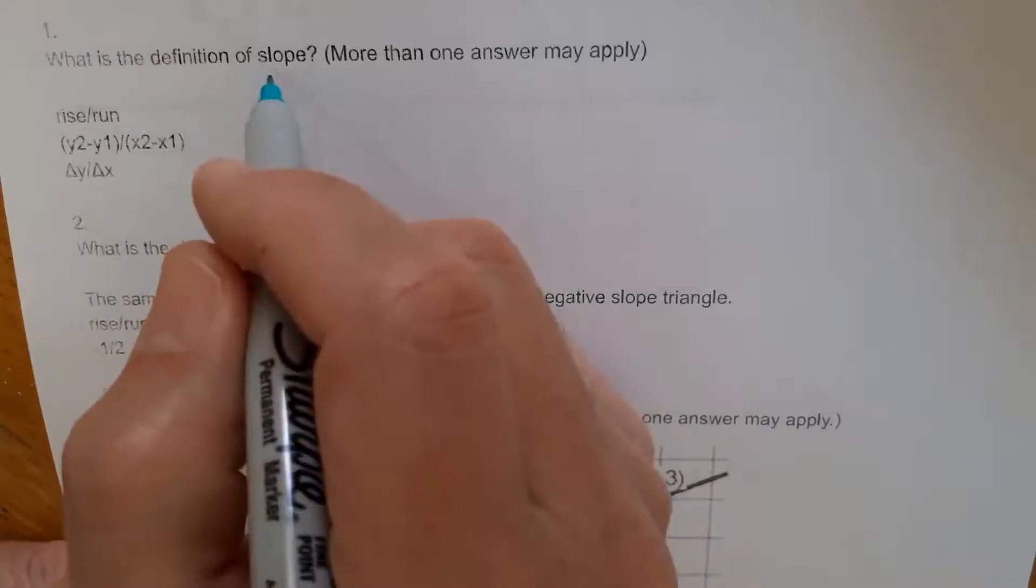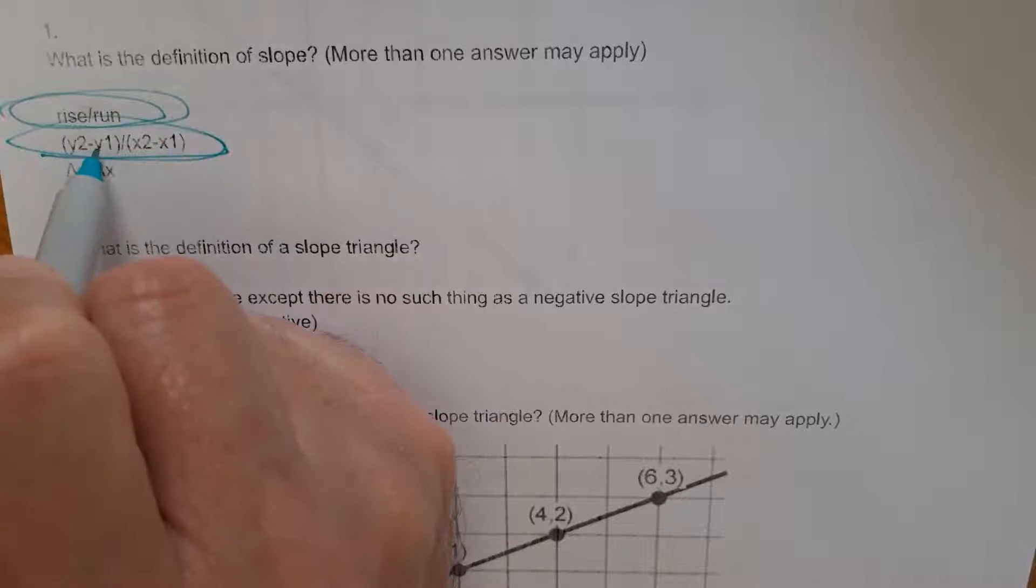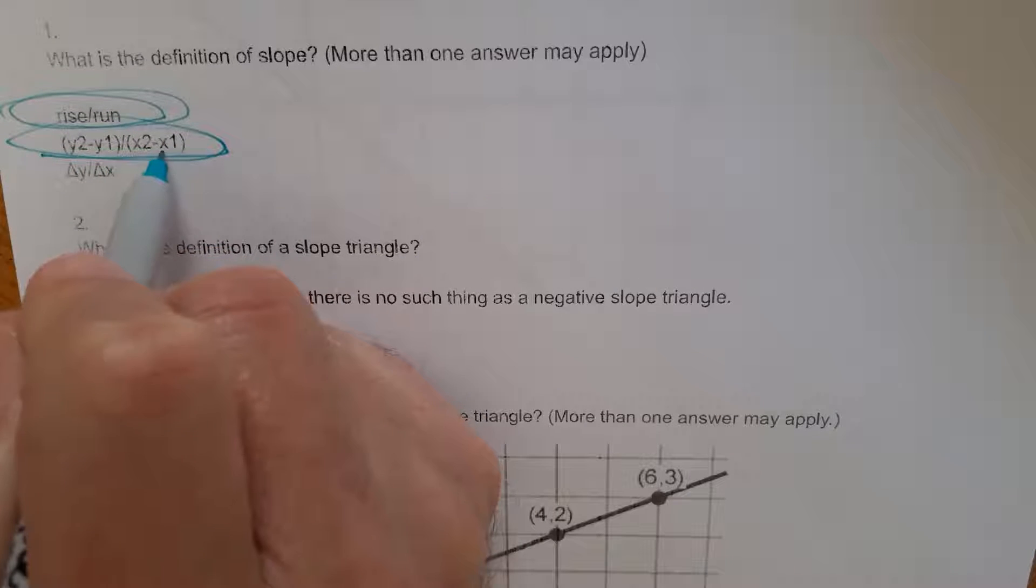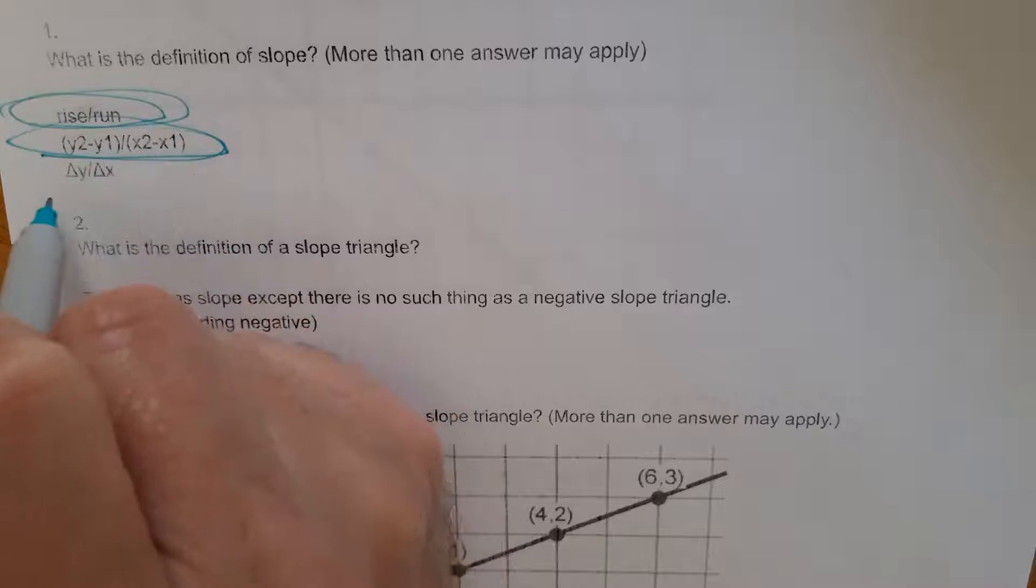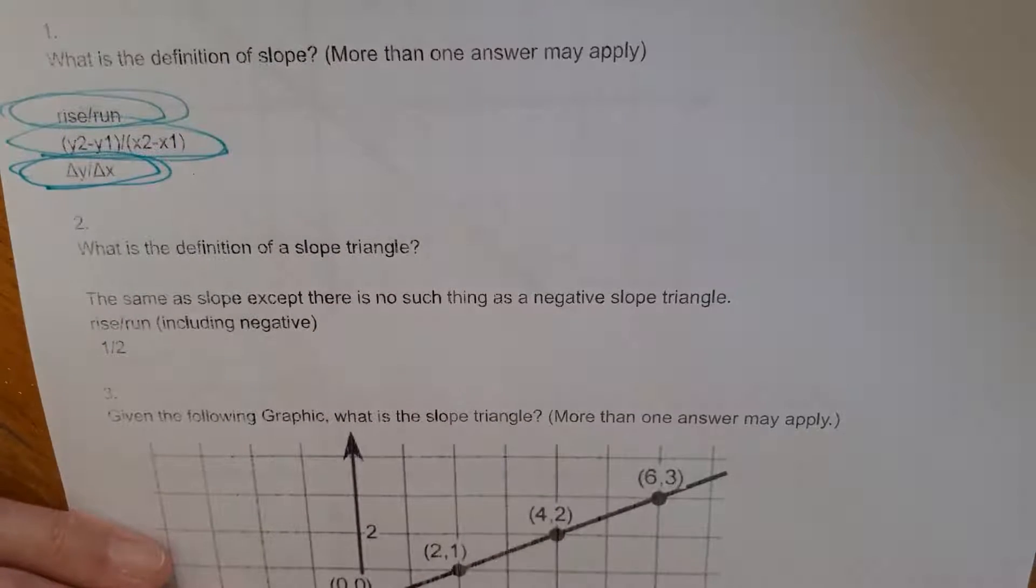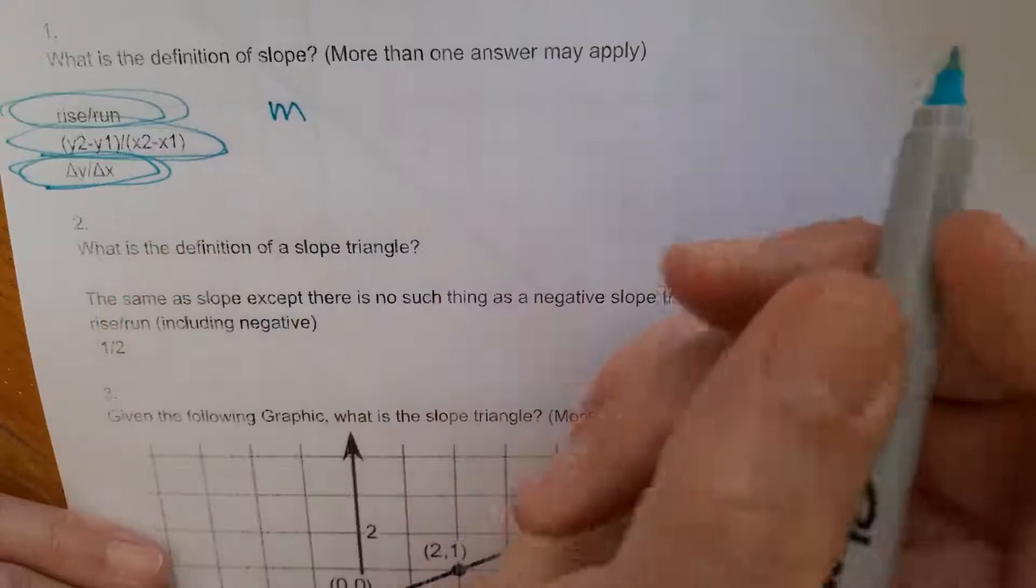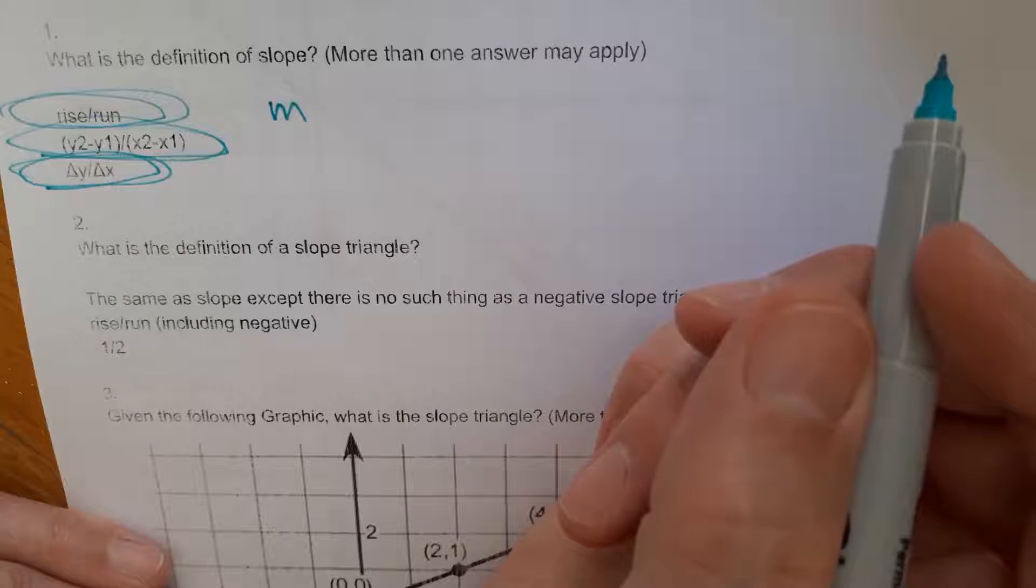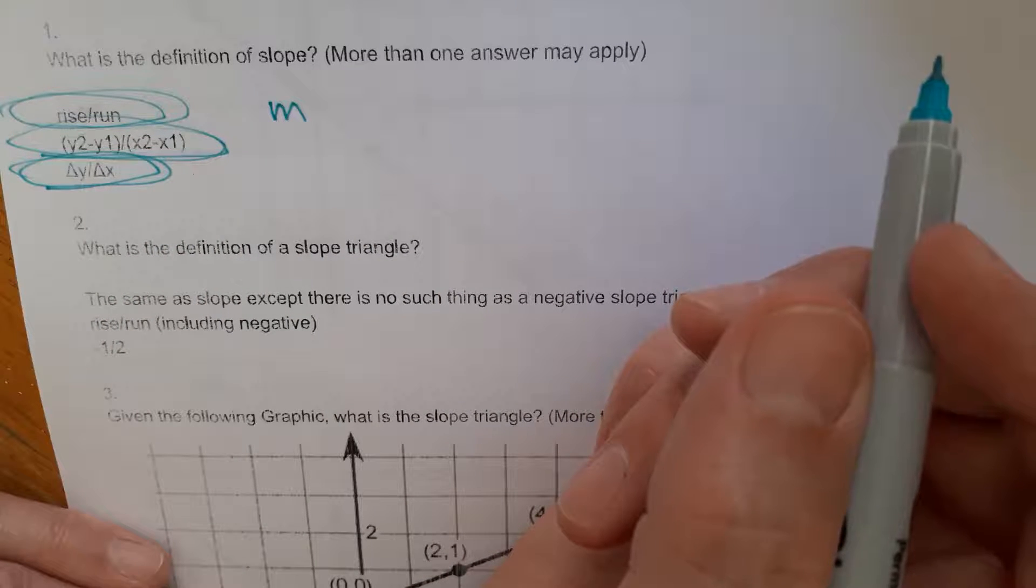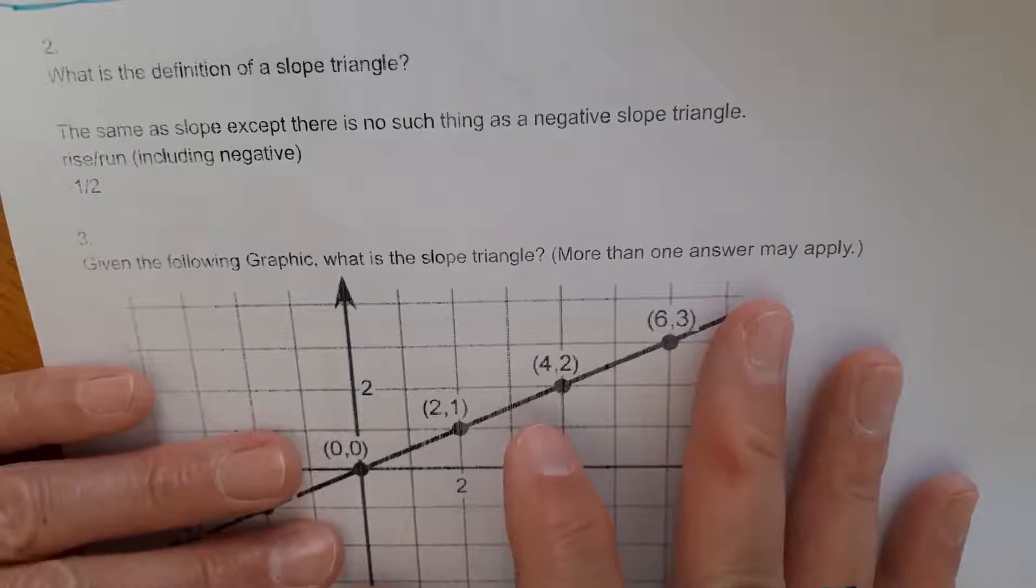So what is the definition of slope? More than one answer may apply. It is rise over run. That's true. It is y2 minus y1 divided by x2 minus x1. That's true. It is delta y, which is change in y, over delta x. So these are all acceptable. All these are right. All three of these. And there's actually more definitions than this. Slope is also m. What else can I think of? Slope is also... Well, I can think of m right now.